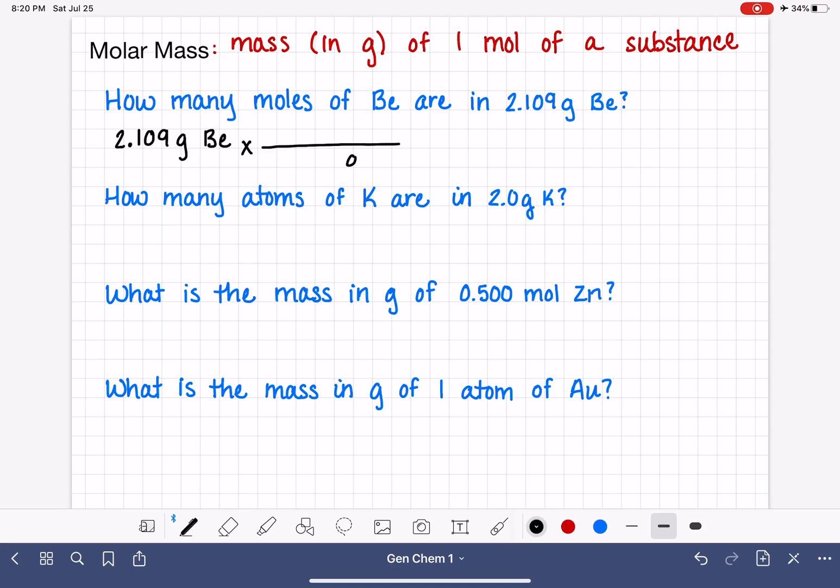And in our conversion factor, we want our unwanted unit to be down on the bottom so that they will mathematically cancel each other out. And we want our desired unit to be up on top, moles of beryllium. So now what we need to do is find the relationship between moles and grams of, in this case, beryllium.